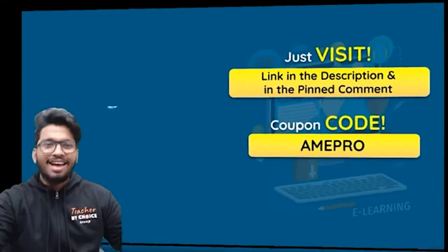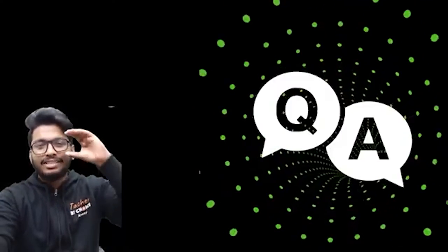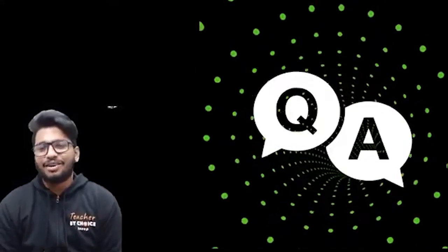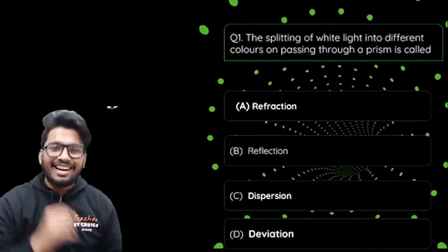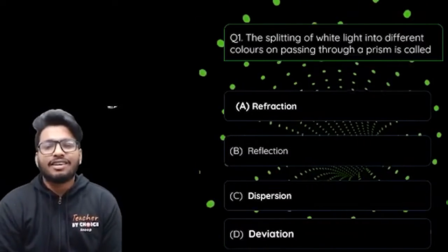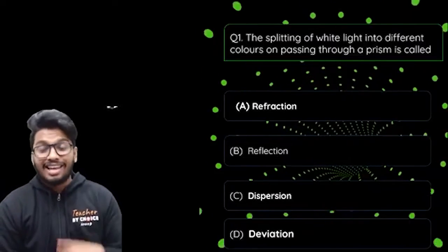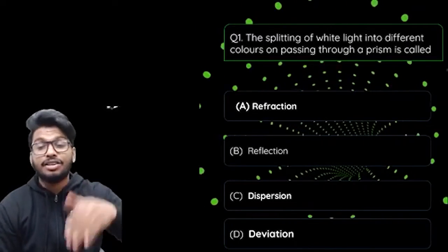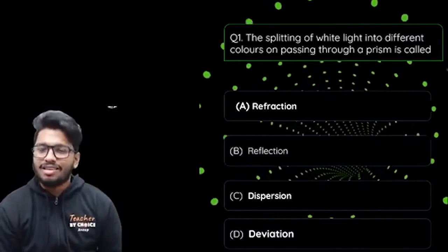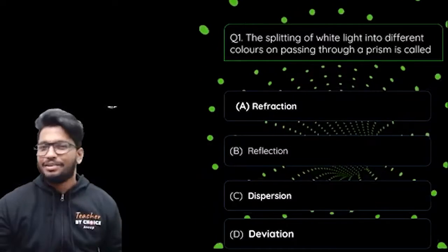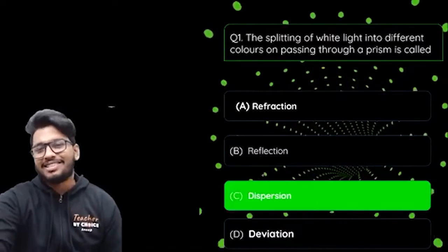Now let's get into the questions. First question on your screen: 'The splitting of white light into different colors on passing through a prism is called as?' — Refraction, Reflection, Dispersion, or Deviation? The answer is Dispersion. Dispersion is the splitting of white light into its seven constituent colors.